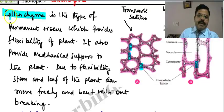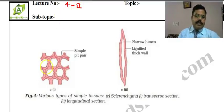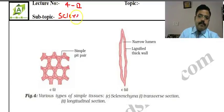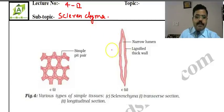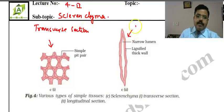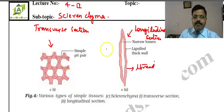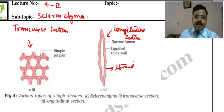The third type of simple permanent tissue we are going to discuss today is sclerenchyma — this is still part two of lecture four. Looking at the figure, we have a transverse section and a longitudinal section of sclerenchyma tissue. This tissue looks like a thread-type structure.